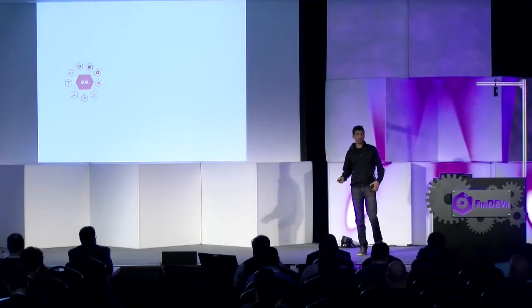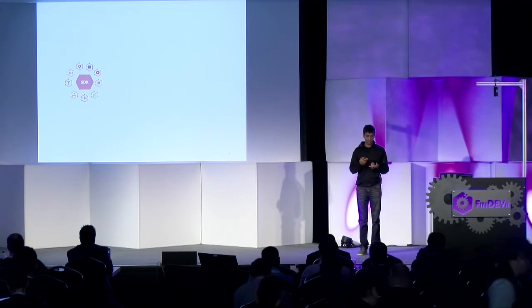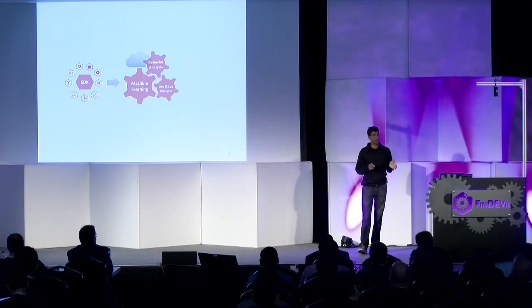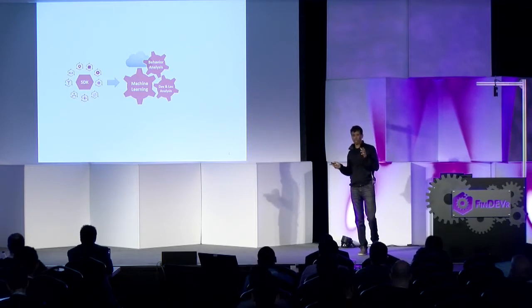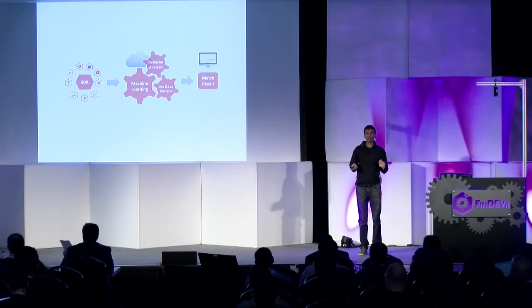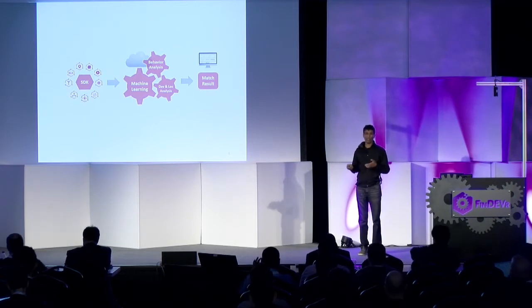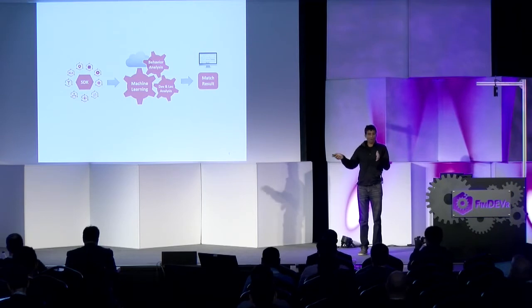So how do you go from knowing there is context to actually authenticating the user? You obviously need to collect the data in a privacy-compliant way, then create a classifier for behavioral and sensor data, combine that with intelligence derived from device and location, and using some threat-driven logic, decide whether you have a context match. We do all the heavy lifting and give you this match result in real time without requiring the user to do anything differently or even know that all of this is happening under the hood.